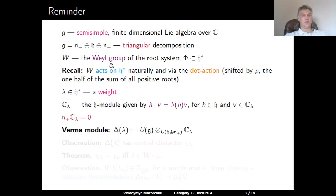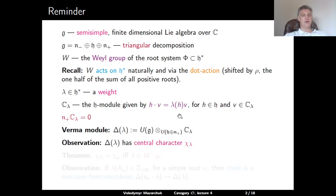The corresponding Verma module Δ(λ) is defined as the U(G)-module obtained from C_λ using induction — we take the Borel module C_λ and induce from the universal enveloping algebra of the Borel subalgebra all the way up to G. We know from previous lectures that the Verma module Δ(λ) has central character χ_λ, meaning elements of the center of U(G) act on Δ(λ) via the algebra homomorphism χ_λ: Z(U(G)) → ℂ.